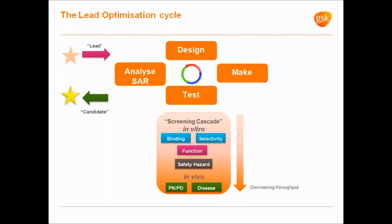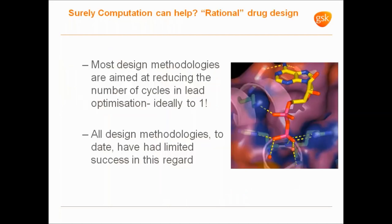We need all of that information in order to decide when we've got a suitable candidate molecule. Surely computation can help with this, and some people will be familiar with the term rational drug design, which attracted many people of my generation into computational chemistry. In that context, rational drug design was where we would get a protein structure and design the molecule to the active site. Most design methodologies aim to do this as quickly as possible, ideally in one shot. And it's fair to say that all design methodologies have to date had very limited success in this regard — there are a small number of elegant stories on rational structure-based design, but they are in the minority of drug approvals.